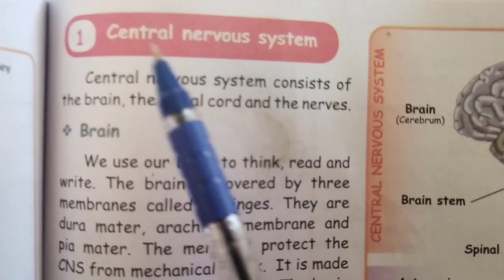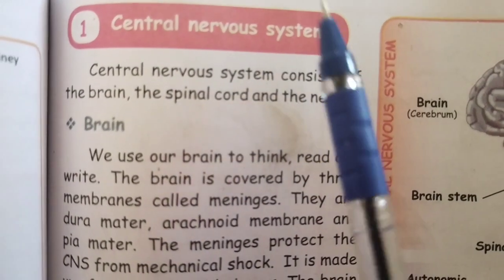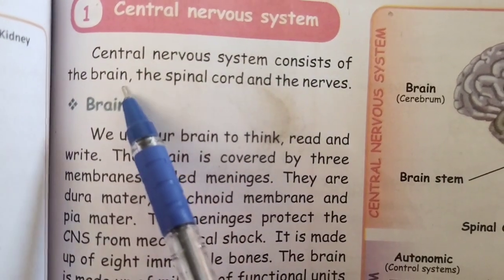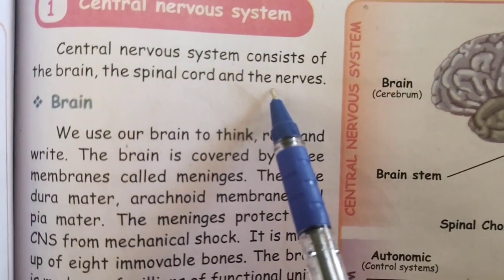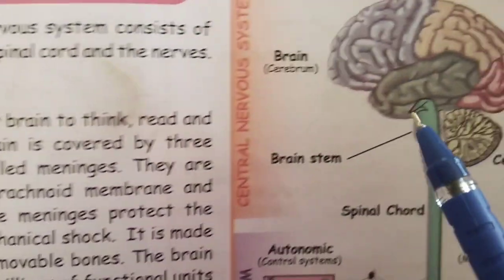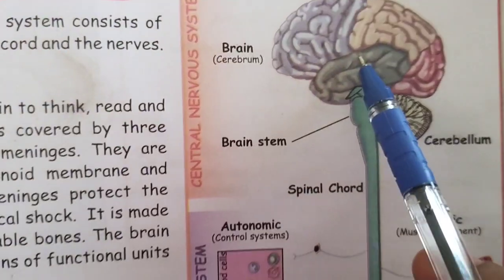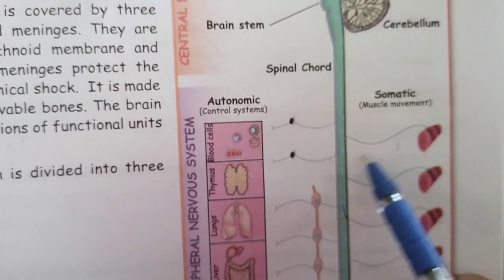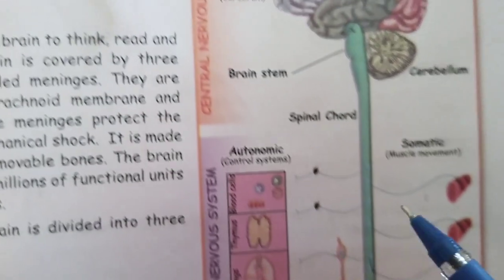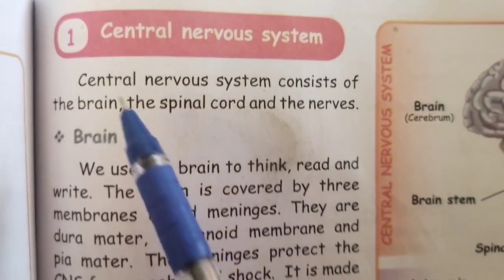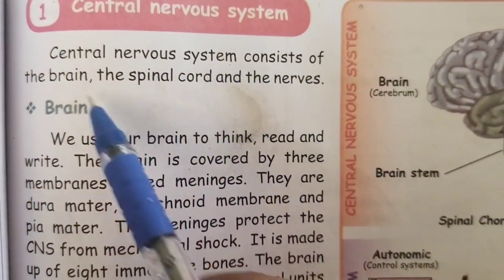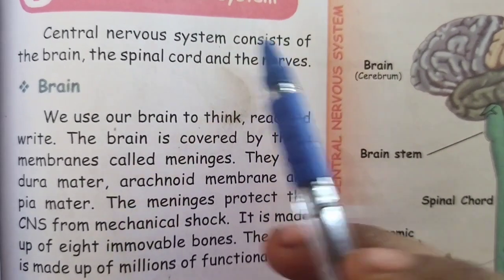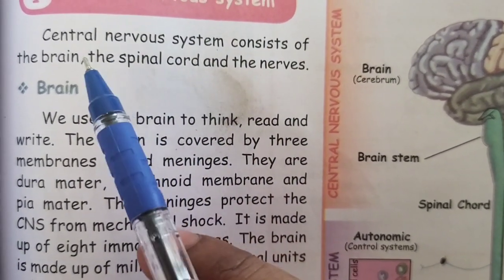First, let's learn about the central nervous system. The central nervous system consists of brain, spinal cord and nerves. So what are the parts of the central nervous system? Brain, spinal cord and many nerves. Now let's learn about these one by one.